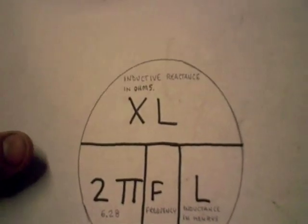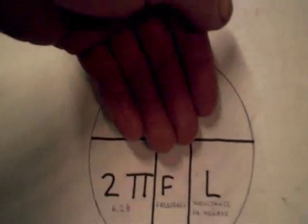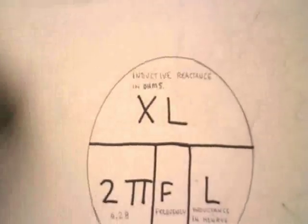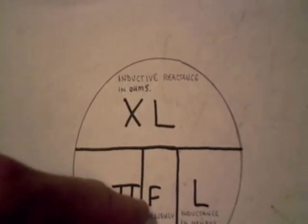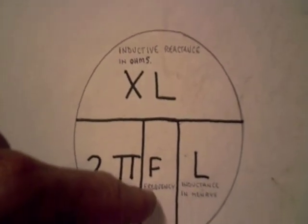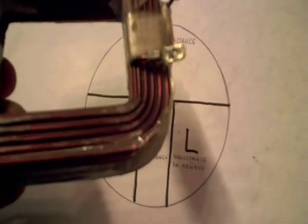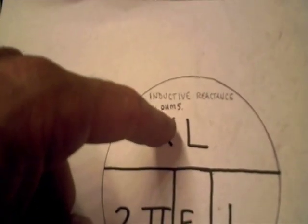If you wanted to know what the inductive reactance is of a particular inductor, you can figure it out in this manner. You basically cover up what you're looking for, and this little chart here tells you what to do. In this case, we've got 2π — which is 6.28 — times the frequency, whatever we're applying to our inductor, times the inductance in henries. So you have to know what the inductance of the coil is in henries, and you'd either buy an inductor of a known value or make it yourself. You'd also need to know what frequency you're applying, and that will give you your inductive reactance, which is measured in ohms.